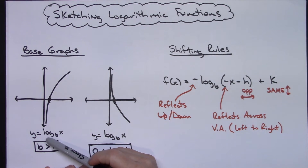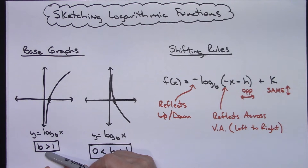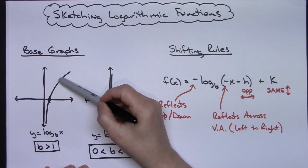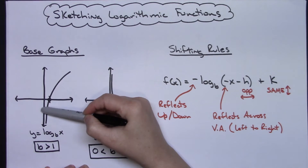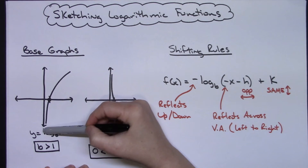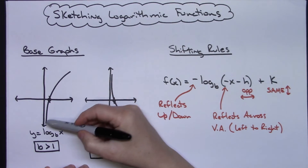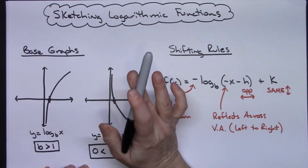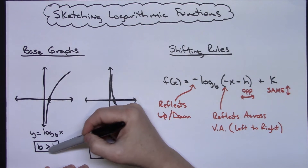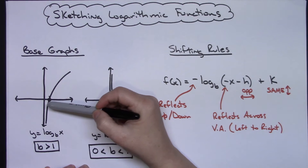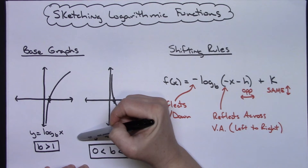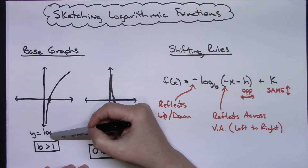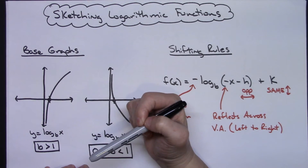Over here I have our base logarithmic functions. In this graph I've done log of X base B where B is greater than one. As long as my base is greater than one, I know my graph is going to go through (1, 0) and go up and to the right, hugging the y-axis as a vertical asymptote. I know it goes through (1, 0) because of the law of exponents — any number raised to the 0 power is always 1.